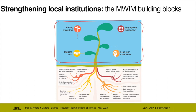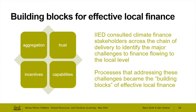The four building blocks — represented by four leaves — are: building trust, shifting incentives, aggregating local action, and building long-term capabilities. These building blocks emerged from interviews and a workshop with stakeholders across the chain of climate finance delivery, tasked with identifying major challenges and barriers to finance flows at the local level. We used to call these the four barriers, but realized that by addressing them, you actually have the fundamentals of good quality climate finance and the potential for scaling up with greater quantity. So those barriers became building blocks.